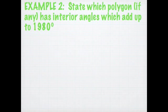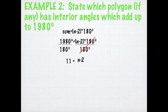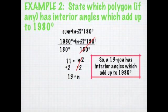Example two: state which polygon, if any, has interior angles which add up to 1,980 degrees. We use the same formula, but put 1,980 in place of the sum: 1,980 = (n − 2) × 180. We need to find n, so divide each side by 180. The 180s cancel on the right, leaving n − 2, and on the left you get 11. Then add 2 to both sides: n = 13. So a 13-gon has interior angles which add up to 1,980 degrees.